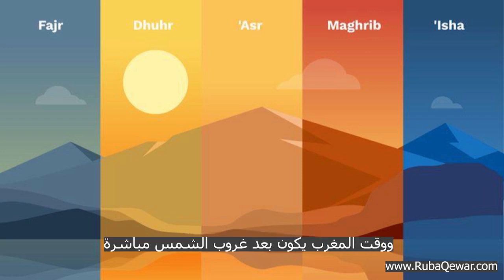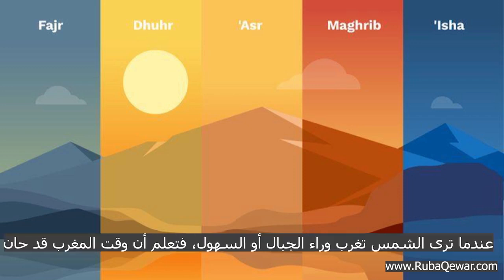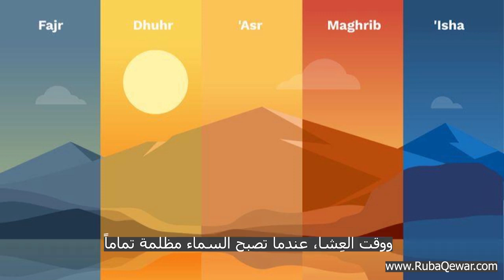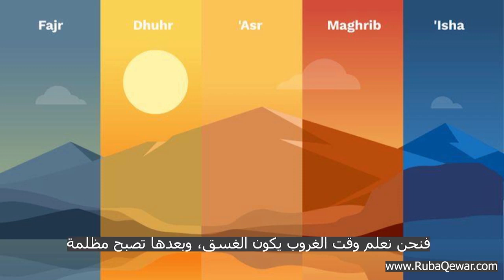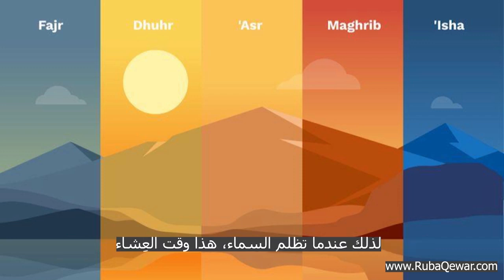Asr time begins when the shadow surpasses the length of the stick or object by about one and a half times. Maghrib is right after sunset, once the sun sets behind the mountains. Isha begins when the sky becomes completely dark — after dusk fades and full darkness sets in.